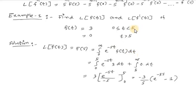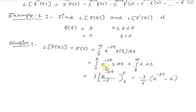We apply a break at t = 5, splitting into integration from 0 to 5 plus integration from 5 to infinity. For t between 0 and 5, f(t) = 3; for t > 5, f(t) = 0, so the second term vanishes. Integrating e^(-st) gives e^(-st)/(-s) with limit 0 to 5, so we get 3·(e^(-5s) - 1)/(-s), which equals 3(1 - e^(-5s))/s.